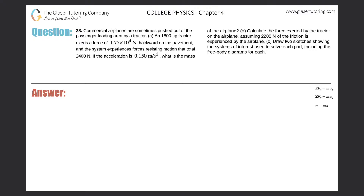Number 28. Commercial airplanes are sometimes pushed out of the passenger loading area by a tractor. Letter A: An 1800 kilogram tractor exerts a force of 1.75 times 10 to the 4 newtons backward on the pavement, and the system experiences forces resisting motion that total 2,400 newtons. If the acceleration is 0.150 meters per second squared, what is the mass of the airplane?